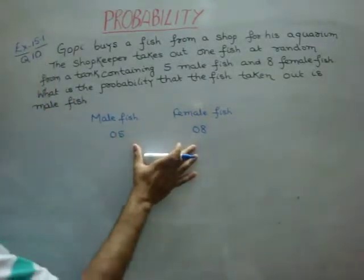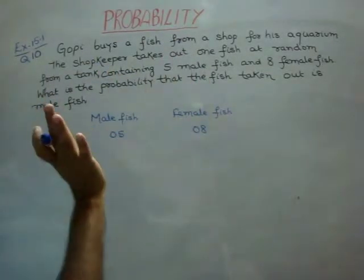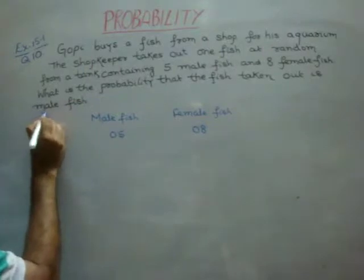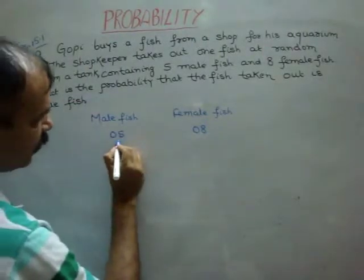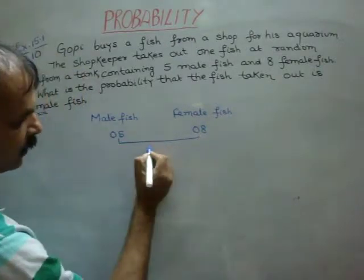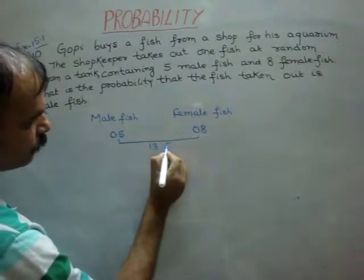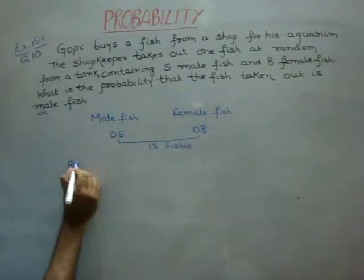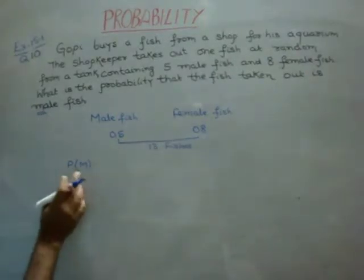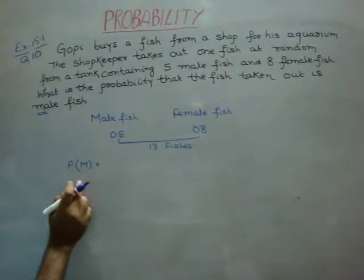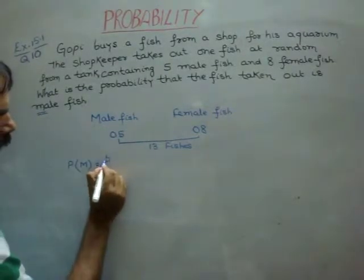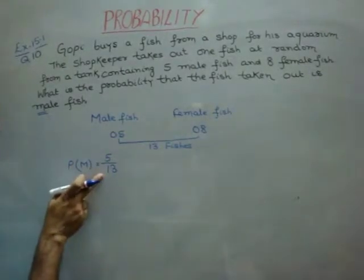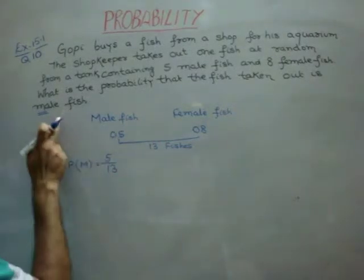Now, the question is that the shopkeeper took out one fish. So he said, what is the probability of a male fish? So total fish is how many? 5 plus 8 is 30. 13 fishes. Okay, so probability of male fish. M, we write the male fish. That is equal to male fish. How many? And total fishes is how many? 13. So what will your probability be? 5 by 13 is your probability of male fishes.